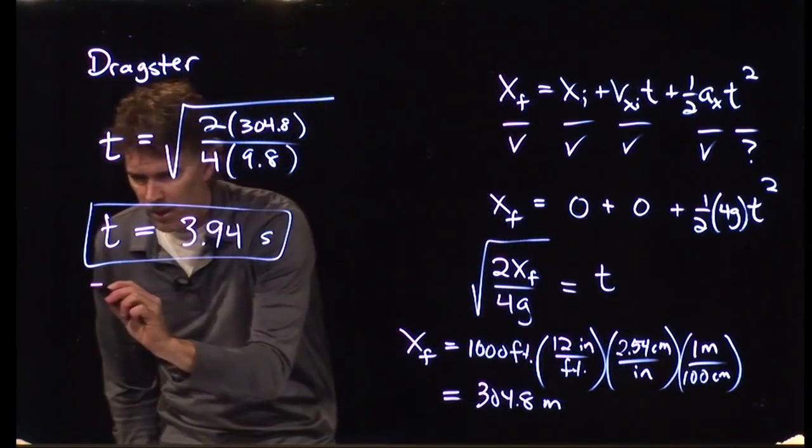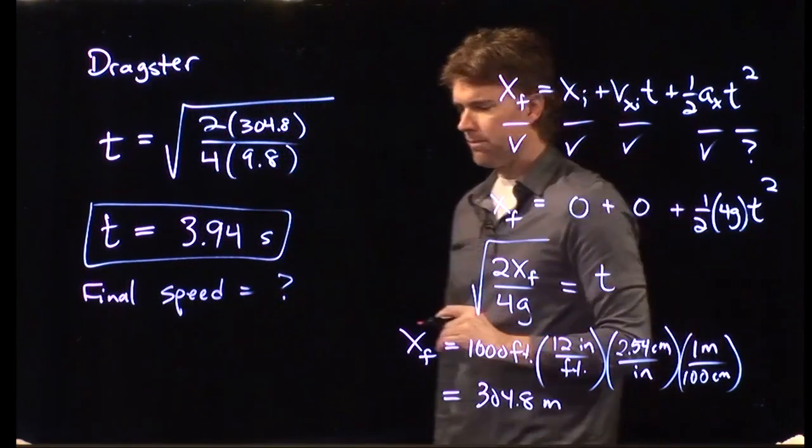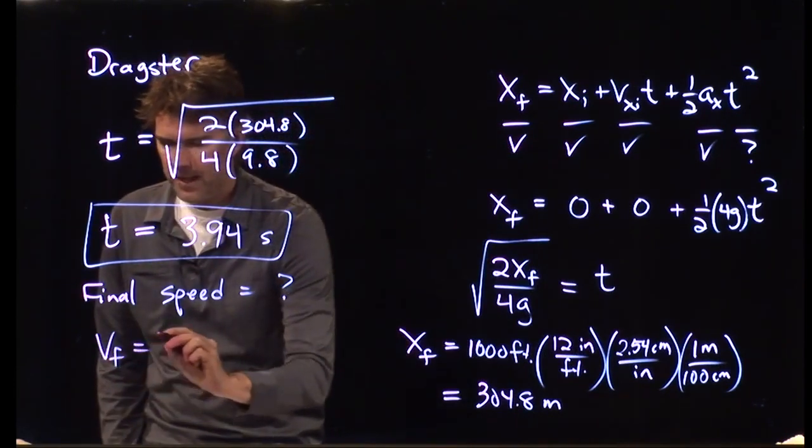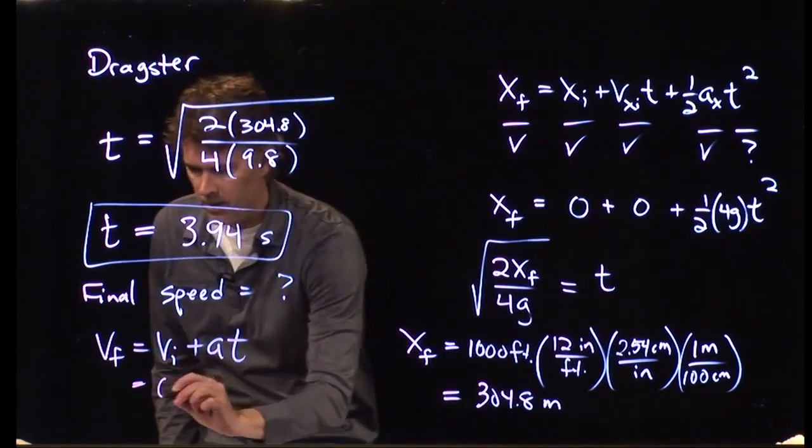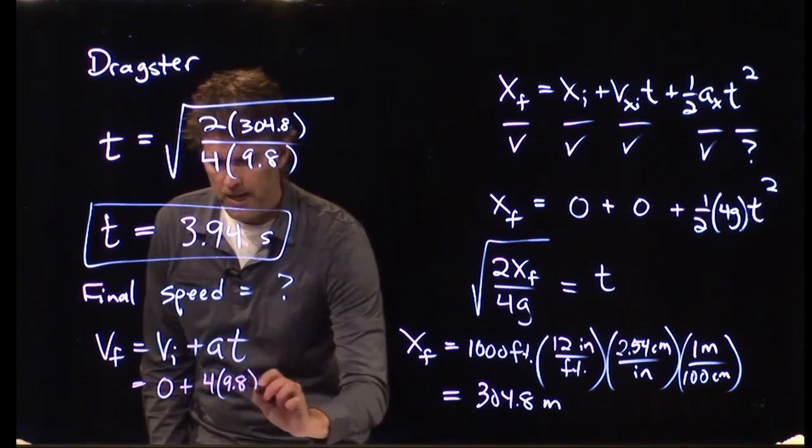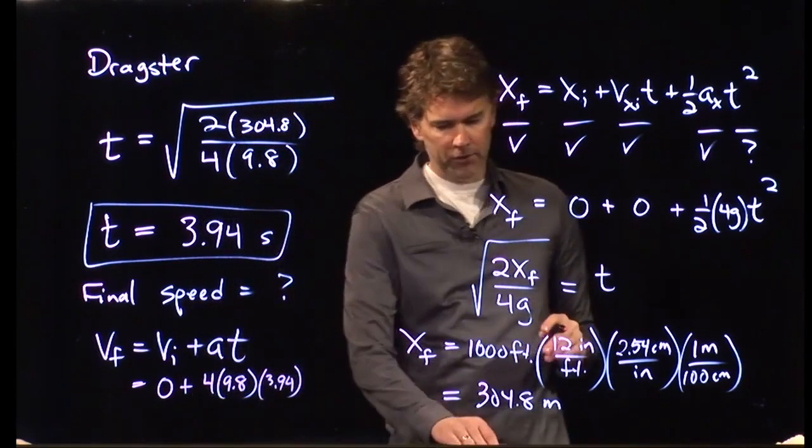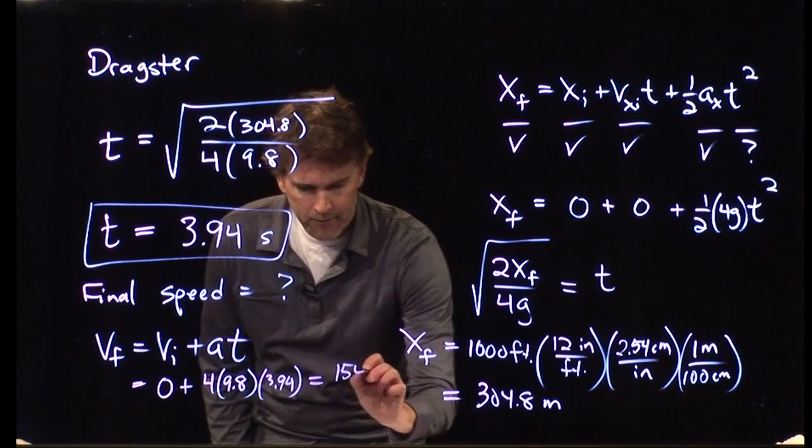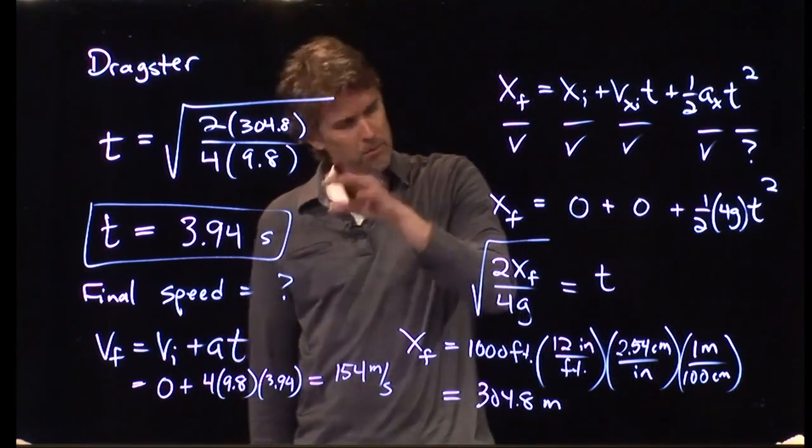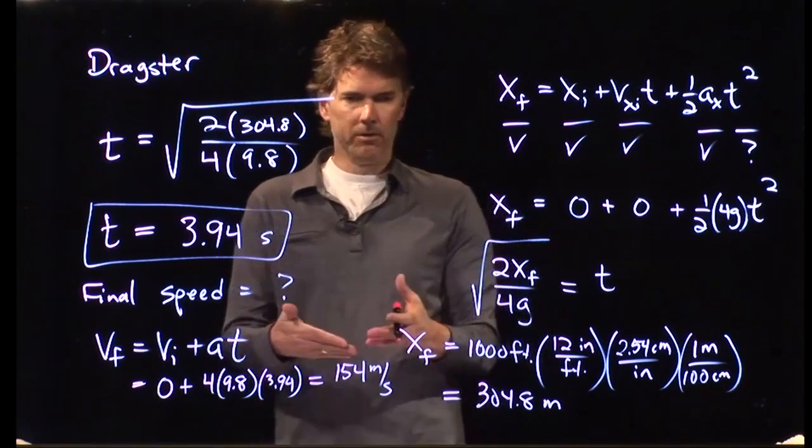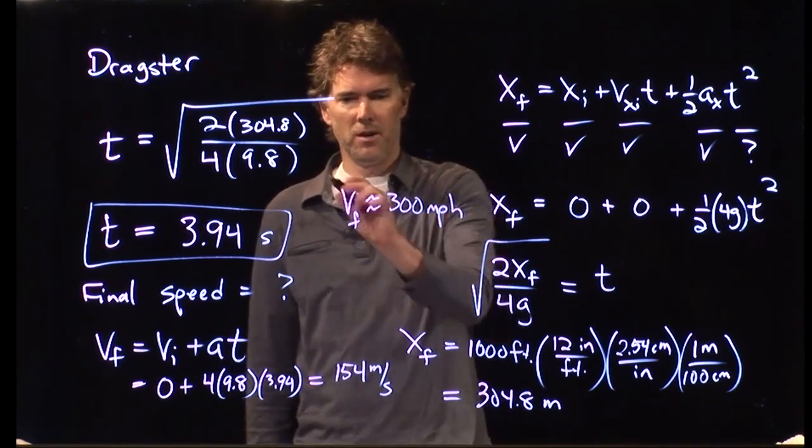Let's see how fast that is. What is the final speed of that drag strip? Well, now we can go back to our other equation. Our other equation was V final equals V initial plus A times T. And now we know all those numbers. V initial is zero. A, we said, is 4 times G, 9.8 meters per second squared. T is now 3.94 seconds. And if you plug in those numbers, we should get 154 meters per second. And if we remember our rule for going from meter per second to miles per hour, it's roughly double. So, double this number and we end up with a final speed of around 300 miles per hour.